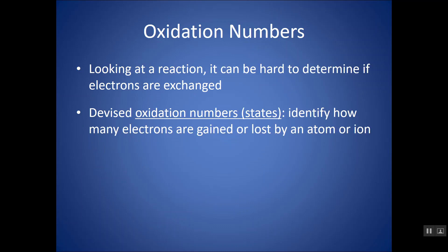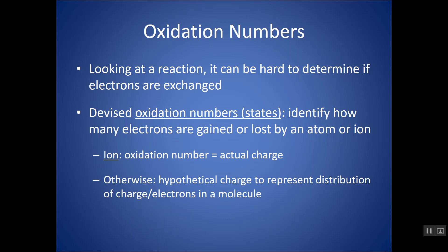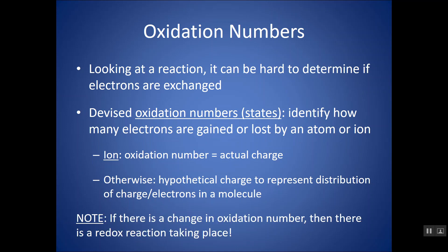Looking at a reaction, it can be hard to determine if electrons are exchanged. So we can come up with oxidation numbers or oxidation states to see how electrons would be gained or lost. For an ion, the oxidation number is the actual charge. Otherwise, it's a hypothetical charge to represent how electrons are distributed in that particular molecule. Anytime there is a change in oxidation number, there is a redox reaction taking place.